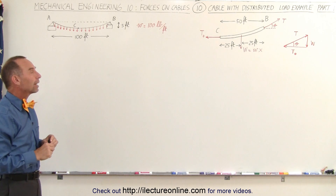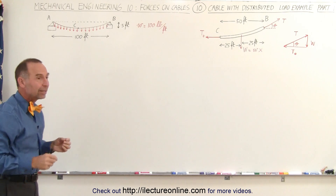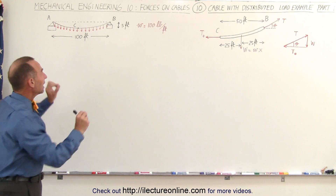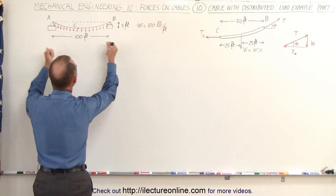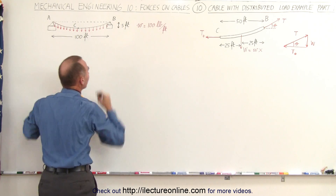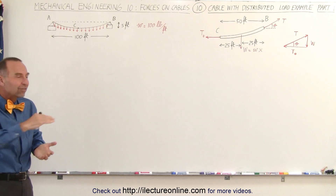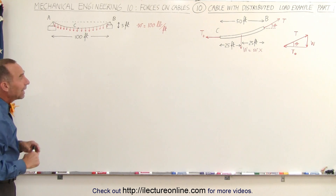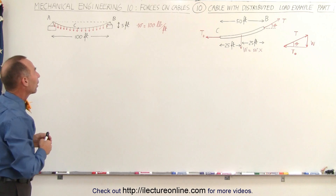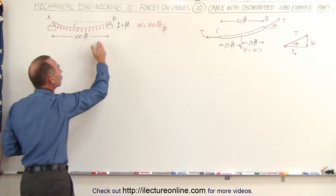In an earlier video, we said that if the weight of the cable itself is causing the sag, then we have a catenary and we have to solve it differently. However, if we pull the cable tight enough so that the sag is very small relative to the length — in this case five feet relative to a hundred-foot section — we can approximate the cable as having a parabolic shape and solve it as a distributed load rather than a catenary.